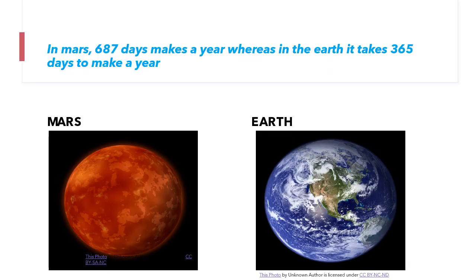Now let us see the differences between Mars and Earth. In Mars, 687 days makes a year, whereas in Earth, it takes 365 days to make a year.